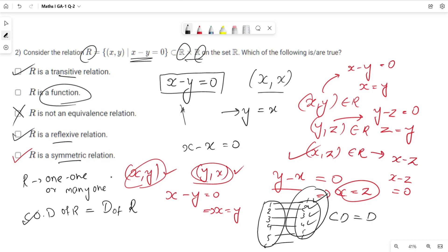And about one-to-one or many-to-one: this function is one-to-one, as every single element from the first set is related to a unique element from the second set. So R is a function.